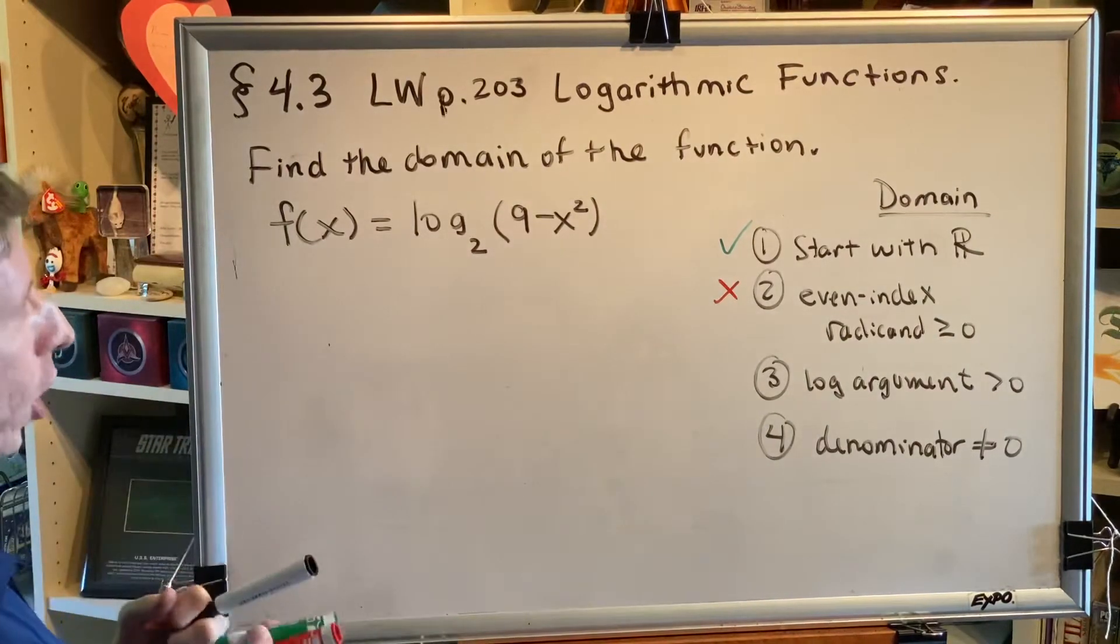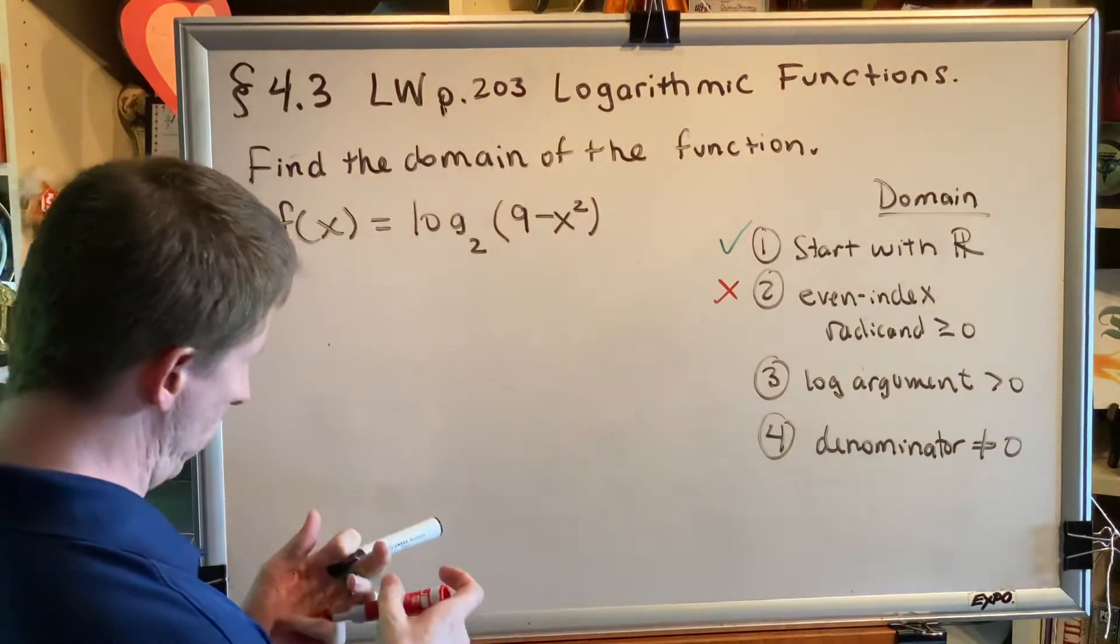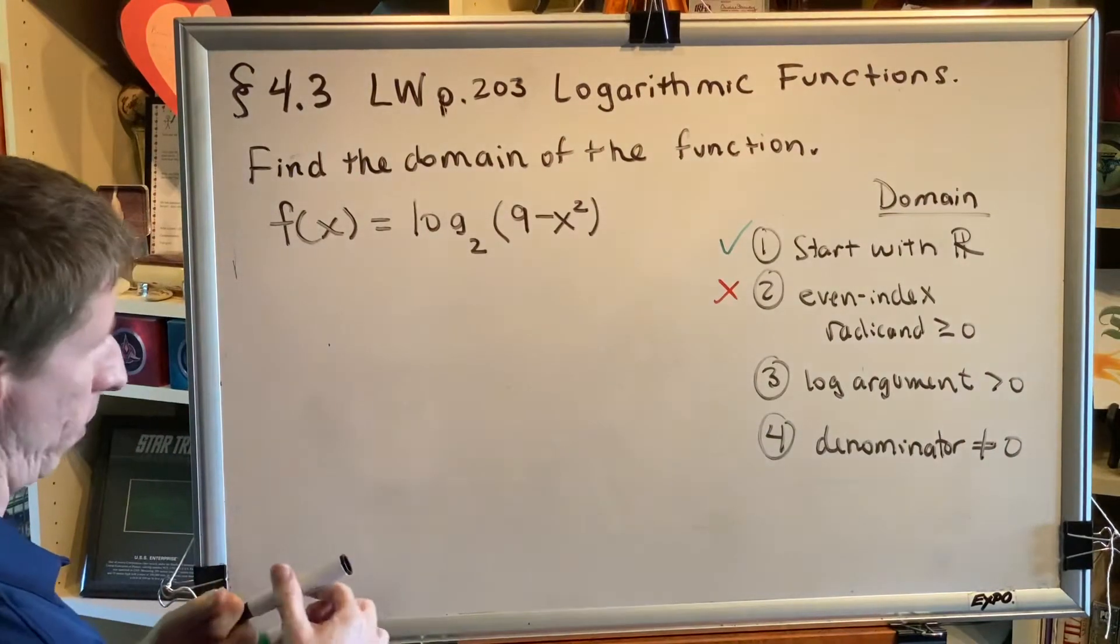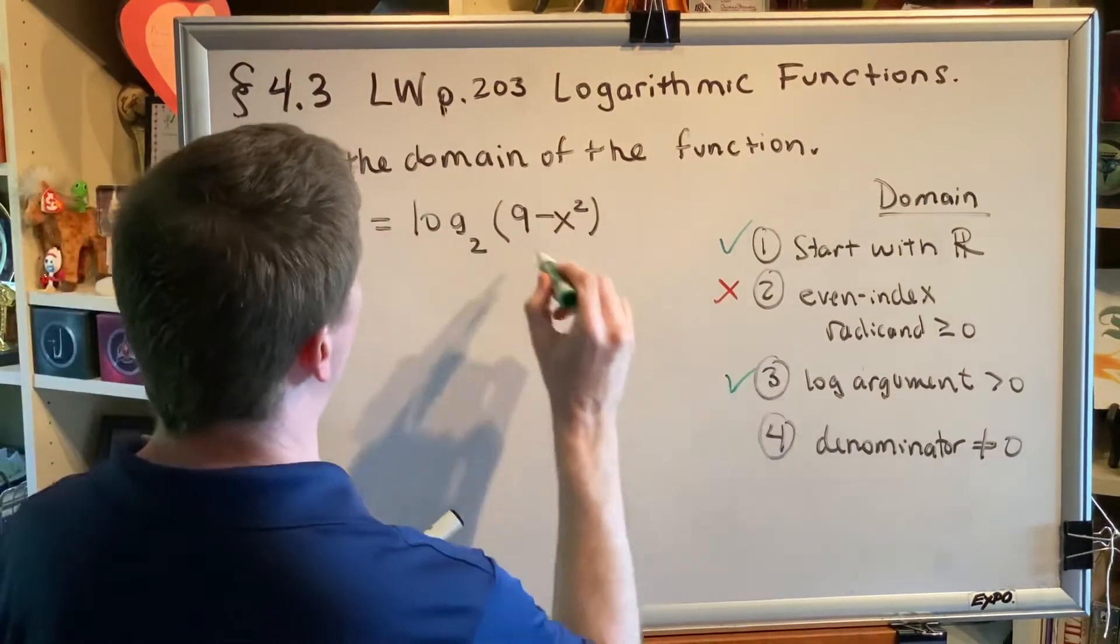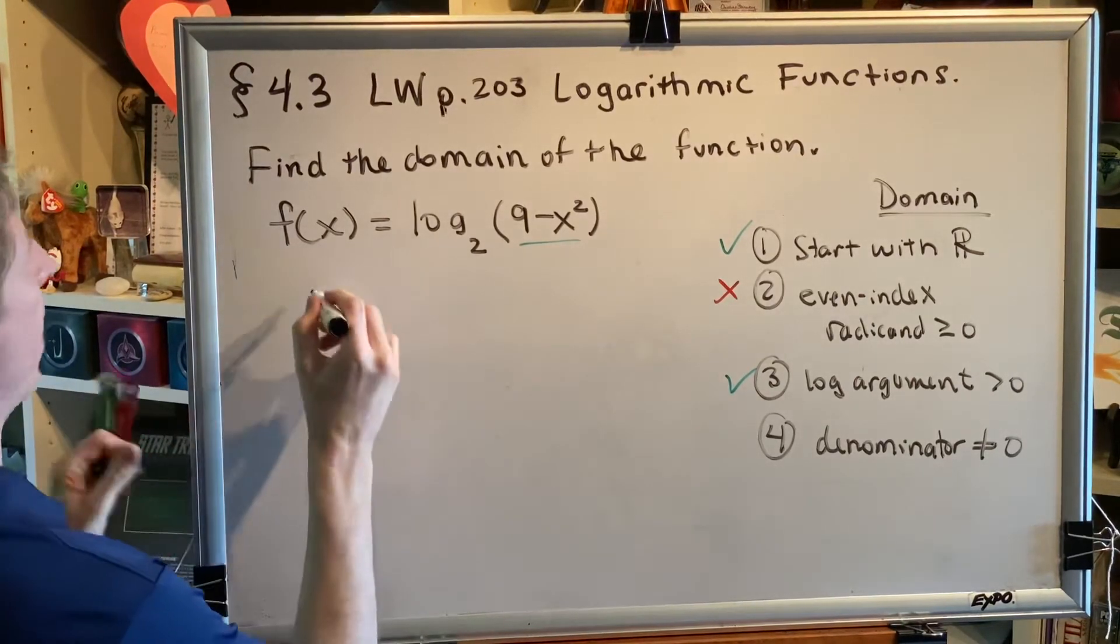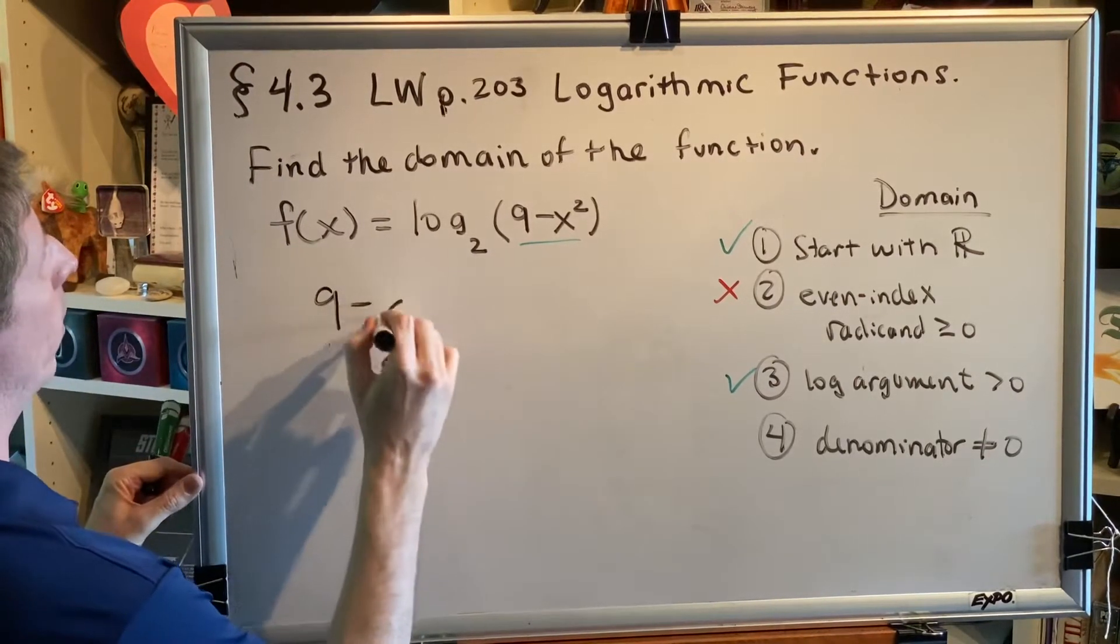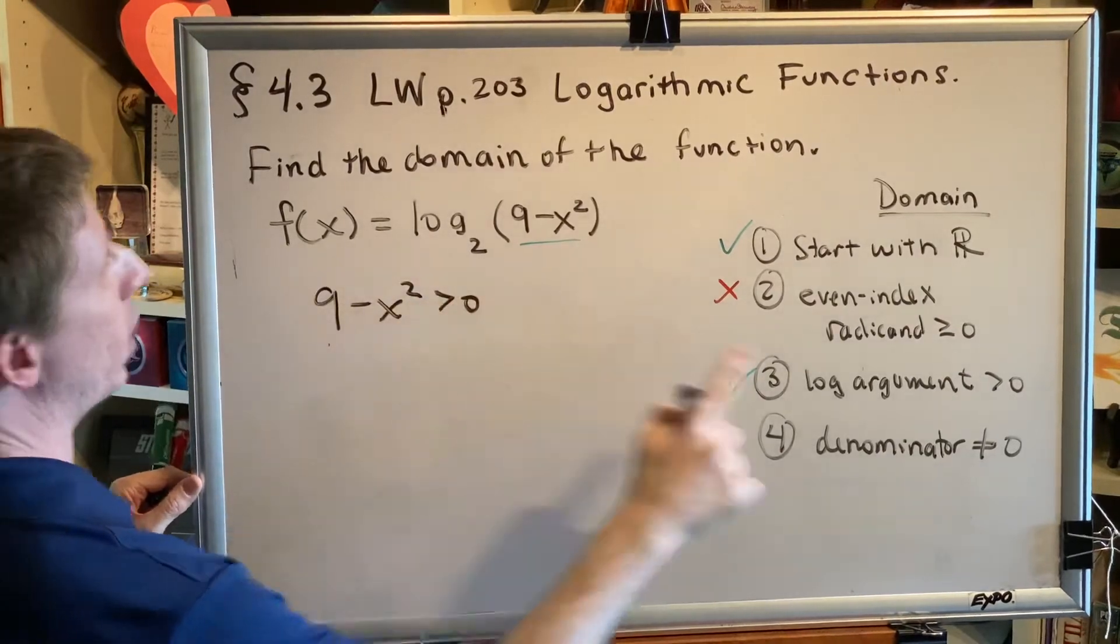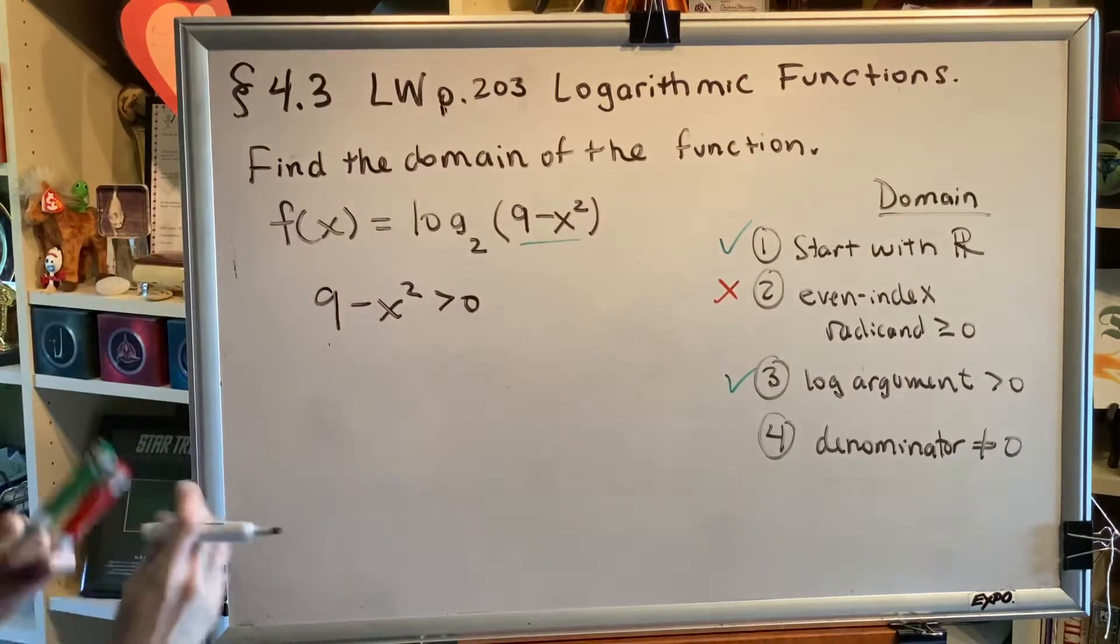Next, we look for log arguments, which we have. So we can see that in this problem, our log argument is 9 minus x squared. So that tells me that 9 minus x squared has to be greater than zero. A log argument must be greater than zero. Alright, let's solve this inequality.